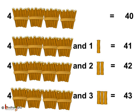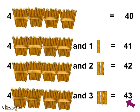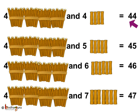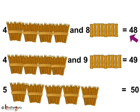Let us summarize it. 4 tens is equal to 40. 4 tens and 1 is 41. 4 tens and 2 is 42. 4 tens and 3 is 43. 4 tens and 4 is 44. 4 tens and 5 is 45. 4 tens and 6 is 46. 4 tens and 7 is 47. 4 tens and 8 is 48. 4 tens and 9 is 49. 5 tens is equal to 50.